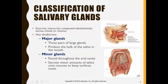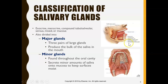Salivary glands are divided into two sections. We have major glands: the parotid gland, the submandibular gland, and the sublingual gland. These are the major glands that form the bulk of our saliva.